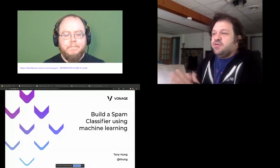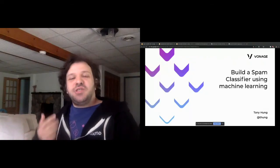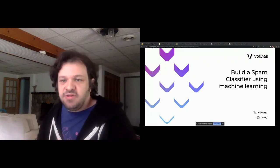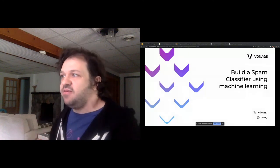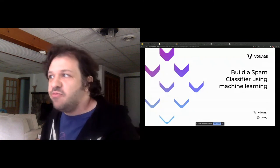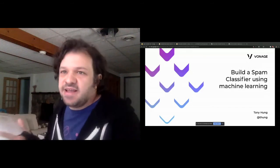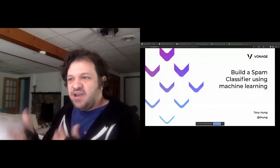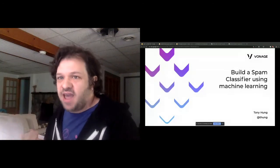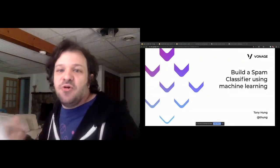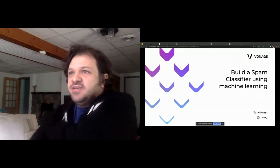Today we're going to talk about how to build a machine learning classifier for predicting spam. We'll go through some code to figure out how to build a model, and we're also going to put it into production — which doesn't get enough emphasis anymore. You have to be able to build the model and get it into production. We're working on spam detection: classifying a message as spam or not spam.